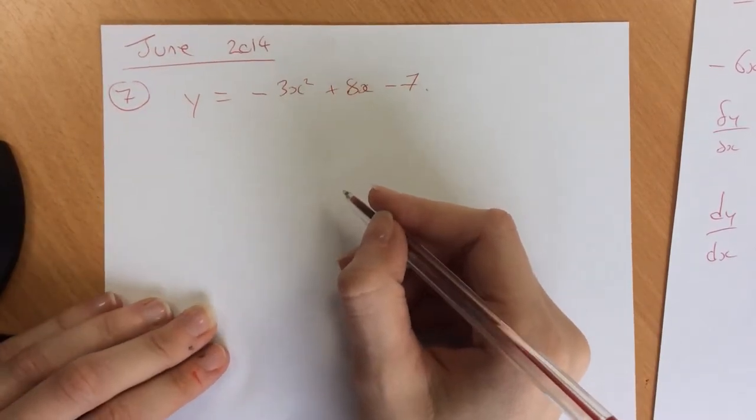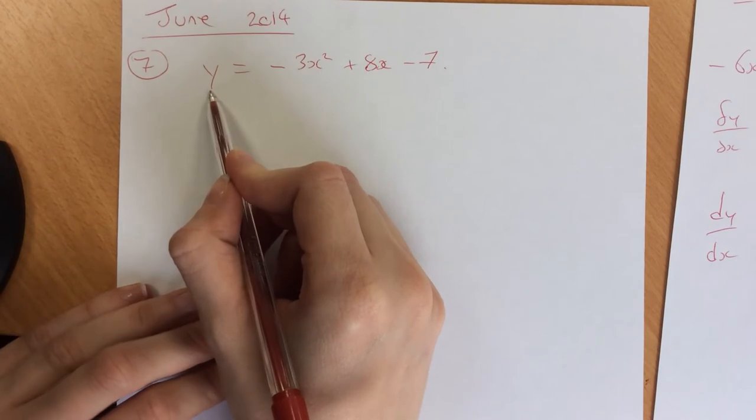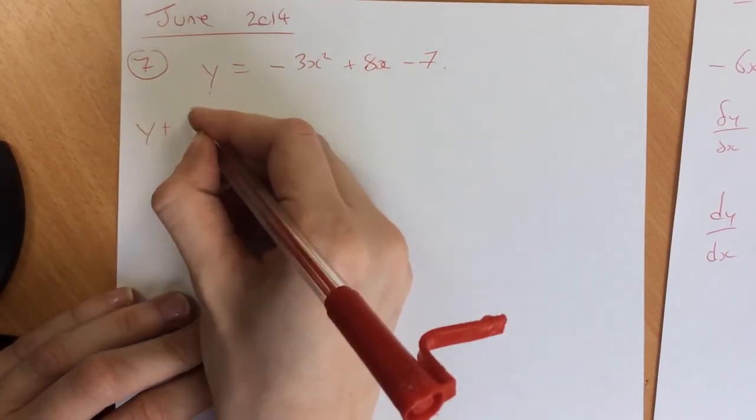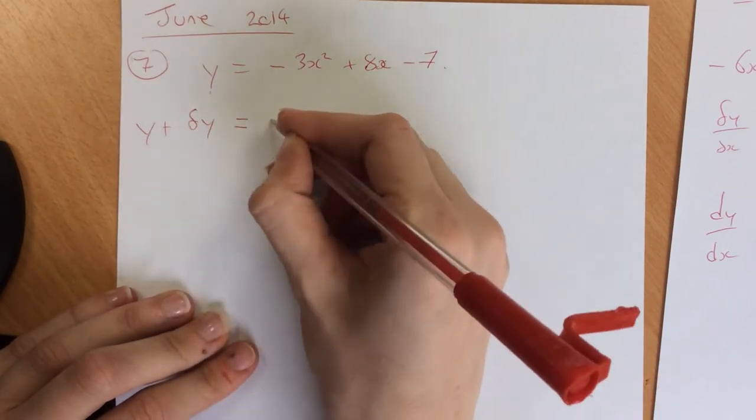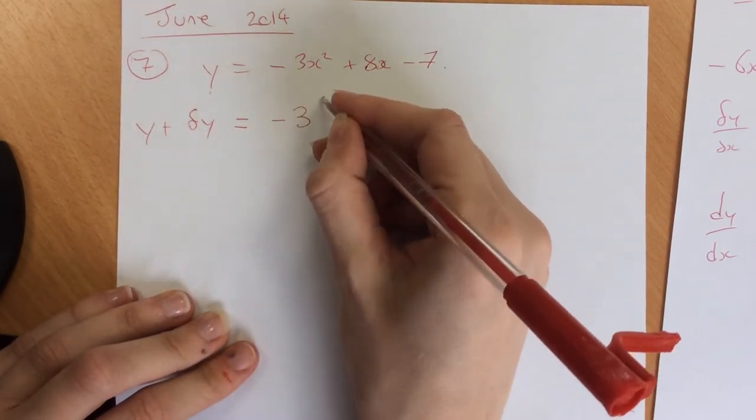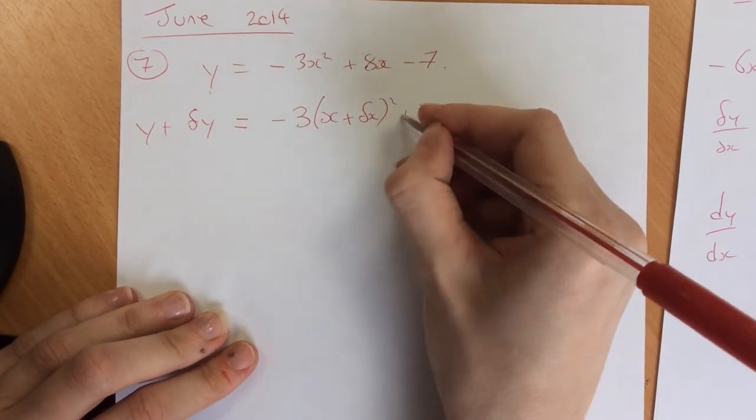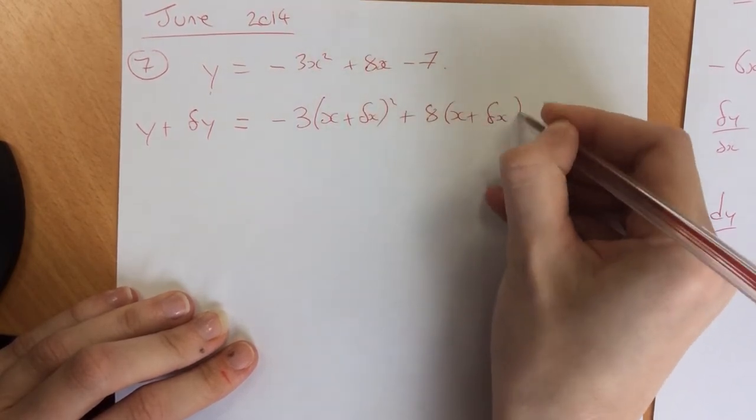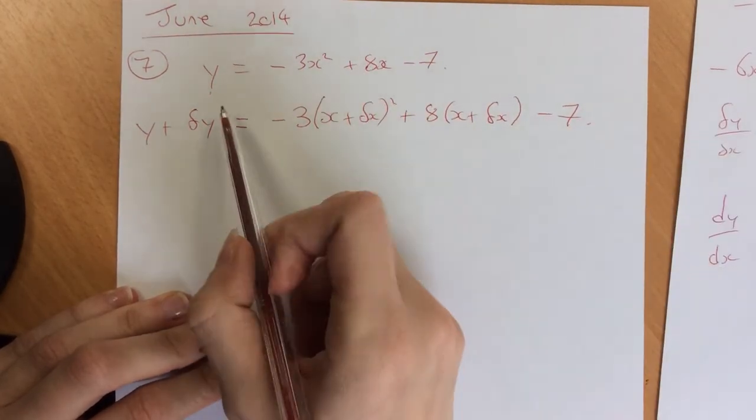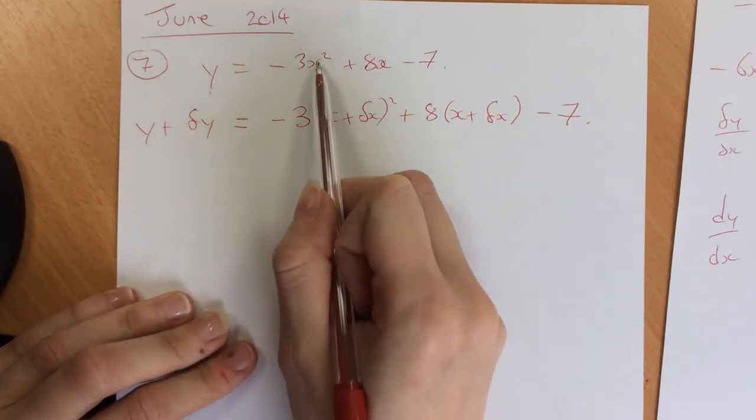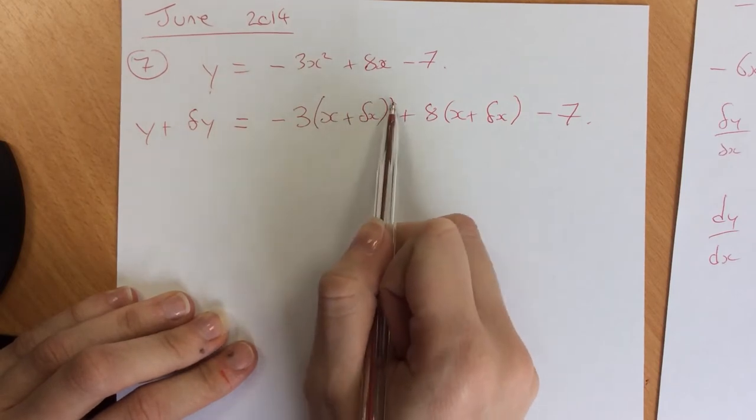First thing you've got to do is everywhere you see a y, add delta y; everywhere you see an x, add delta x. So you get y + δy = -3(x + δx)² + 8(x + δx) - 7. Everywhere I saw a y I added delta y, everywhere I saw an x I added delta x, and this is squared.